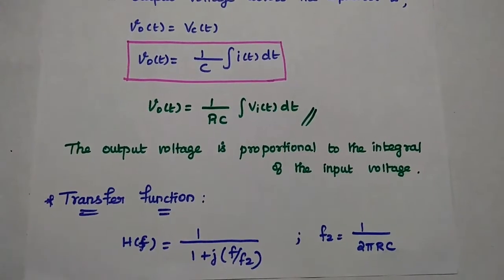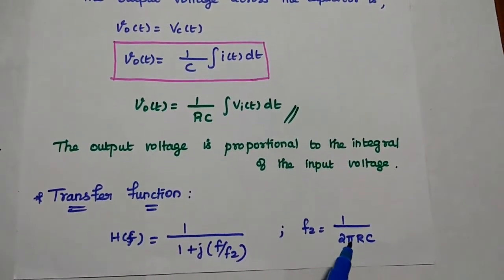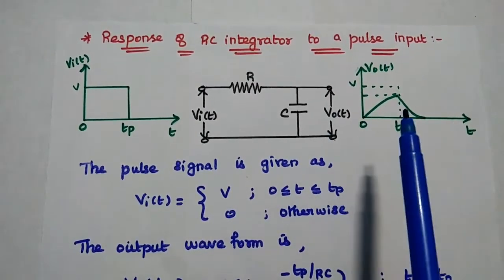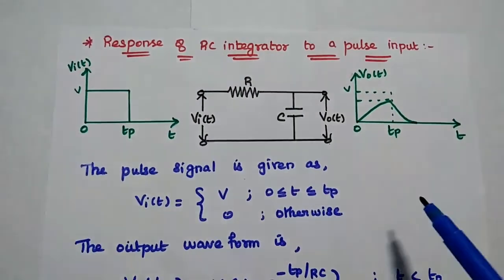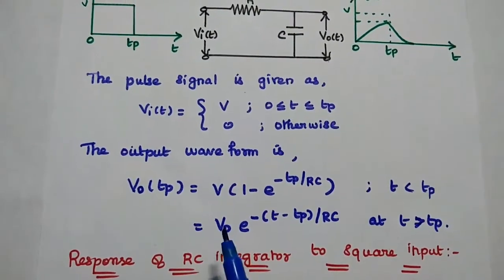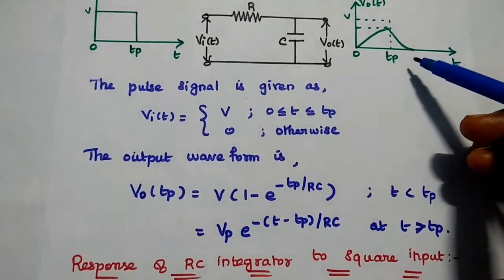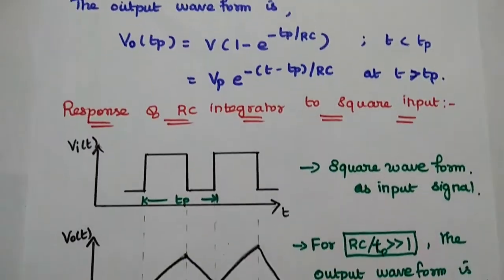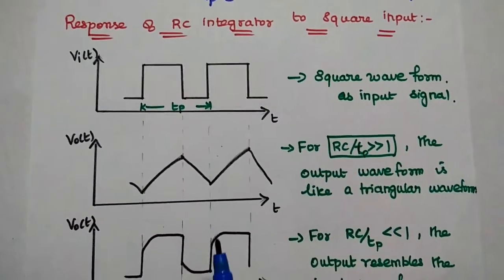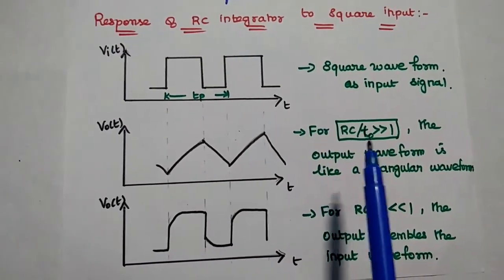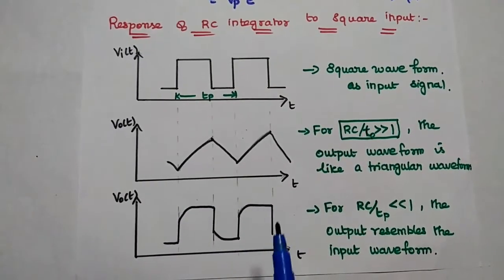In terms of frequency, the transfer function of the integrator can be represented as H of F equal to 1 by 1 plus J times F by F2, where F2 is equal to 1 by 2 pi RC. Next is the response of the RC integrator to a pulse input signal. We consider the pulse input signal for the duration Tp. The output is a triangular signal. The output V0 of T is equal to Vp, the peak voltage, times e to the power of minus T minus Tp by RC. This output signal depends on the time constant. For a square wave input signal, based on the time constant we get a triangular output. For a large time constant, the output waveform is triangular; for a small time constant, the output resembles the input signal with a curved shape.